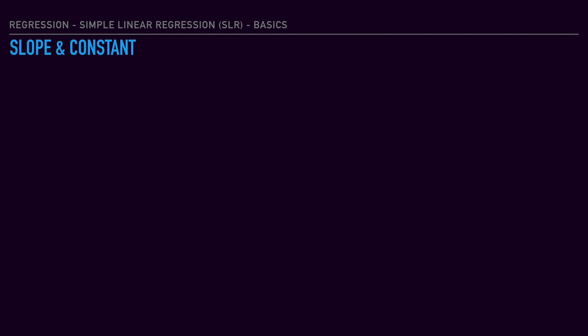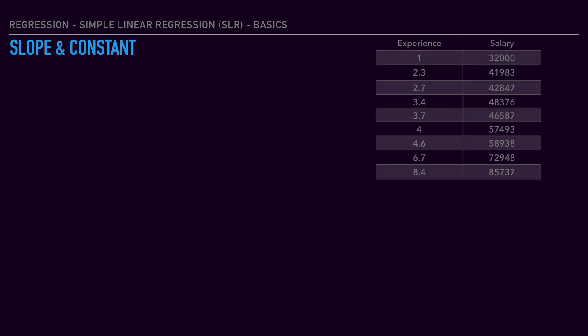Now, let's get into detail about slope and constant with an example. Let's consider a dataset with experience and salary as two variables. Experience is the input variable x, salary is the output variable y. If we look at the pattern, as experience increases, the salary package increases. Now, let's plot this experience and salary in a graph. This will be the best fitted slope line based on the formula y = c + bx.